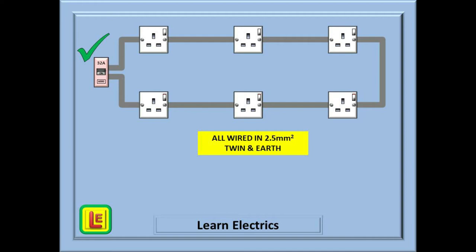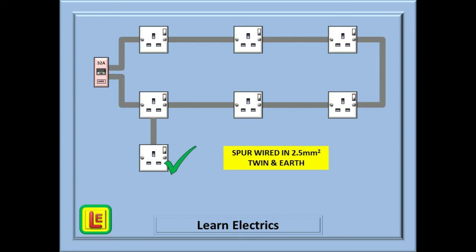A ring circuit does not have to be protected by a 32 amp breaker, but whatever the size is we need to follow the same rules to prevent overloading of any of the cables. Here we have added a single socket as a spur from the ring and we have used 2.5mm cable for the connection to the ring.